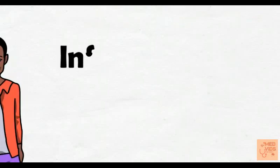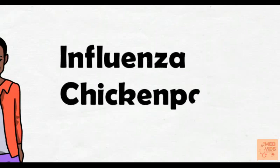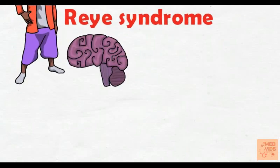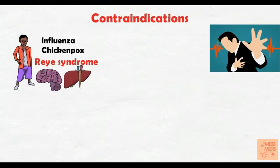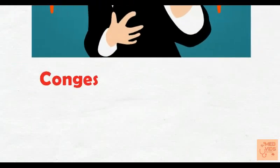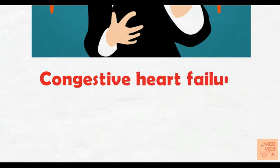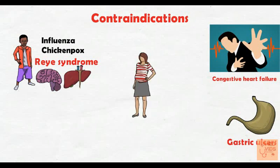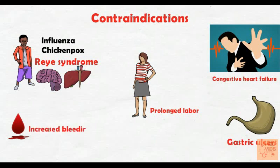Contraindications of aspirin: In children infected with influenza, chickenpox, or various other viral infections, aspirin should be avoided as it can cause Reye's syndrome, manifested by encephalopathy and liver damage. It should be avoided in patients with heart disease as it can increase cardiac workload and precipitate congestive cardiac failure. It should be avoided in patients with gastric ulcers. Most importantly, it should be avoided in pregnant women as it can cause prolonged labor and can cross the placental barrier to reach the fetus. It should also be avoided in persons with bleeding disorders as it increases the risk of bleeding.